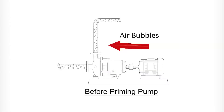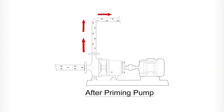Priming is an action required to evacuate all the air bubbles from the pump and pipeline before startup, in order to create a vacuum to pump the liquid.